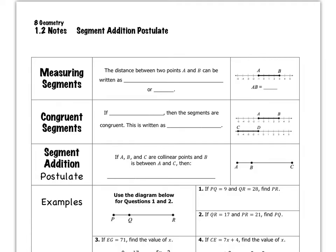First of all, when we're talking about measuring segments, if we have a line or a line segment — as you can see over here on the right — the segment here would be line segment AB. The distance between those two points, A and B, can be written as the length of segment AB. Remember from the last video, segment AB is written with an A and a B and just a bar drawn over those. Or, it could be written as AB.